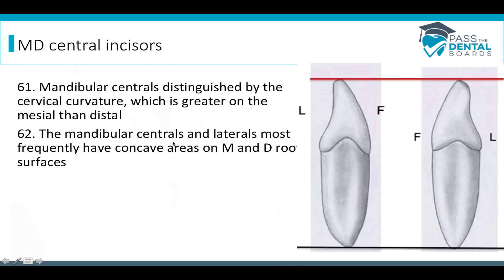The mandibular central is distinguished by cervical curvature that is greater on the mesial than the distal — another way to ask about the CEJ, using the maxillary central as our model to remember. The mandibular centrals and laterals most frequently have concave areas on the mesial and distal root surfaces, visible as a squished or inward-facing shadow on the root.